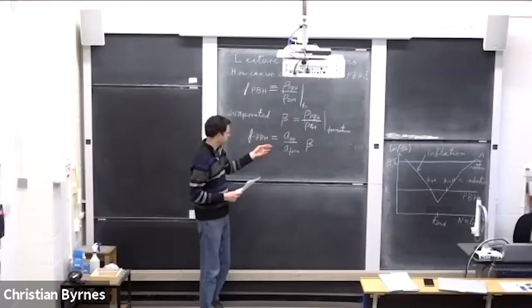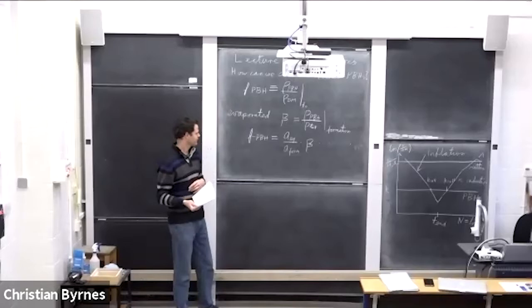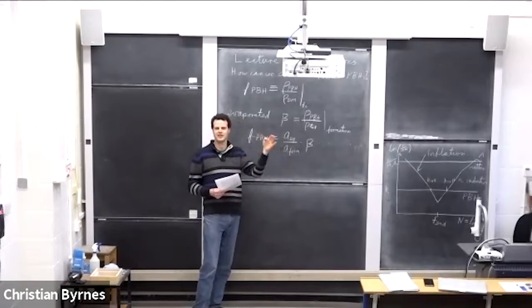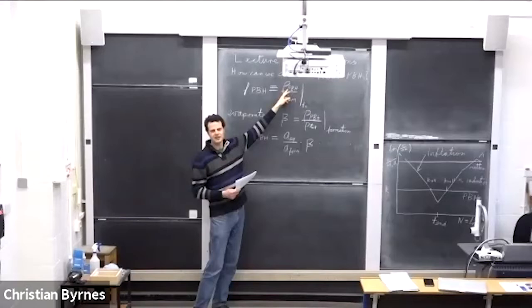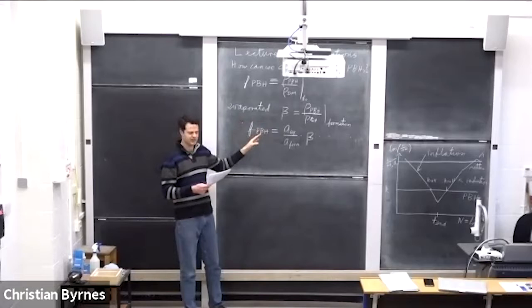We can relate fpbh and beta by the factor a_equality over a_formation times beta. Sometimes people use this as the definition of fpbh even if the black hole mass has changed through evaporation or accretion. Just as a warning: sometimes on constraint plots, fpbh goes to the left of the decayed ones, where rho_pbh today is really zero, but a non-zero value is still defined this way.